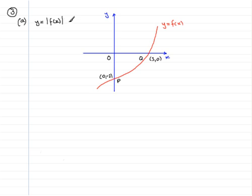Now y equals the mod of f of x is a reflection of any negative y values in the x axis. So it's this part of the original graph of y equals f of x that is reflected in the x axis.